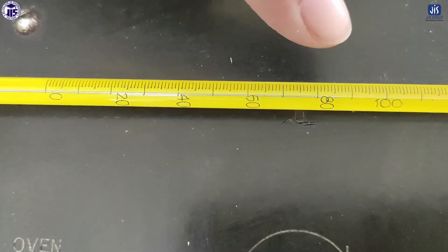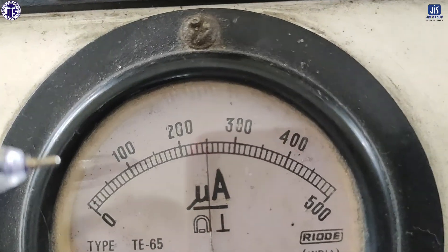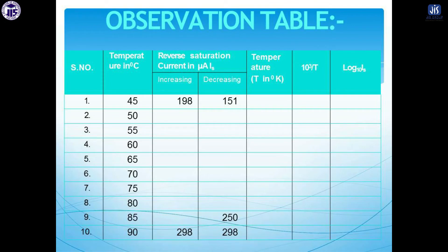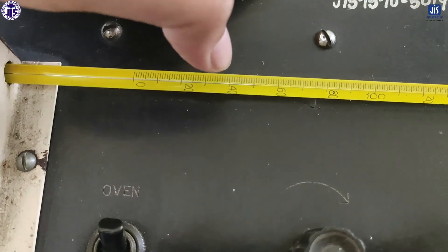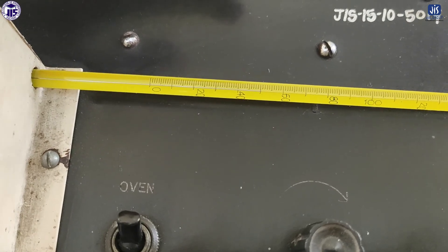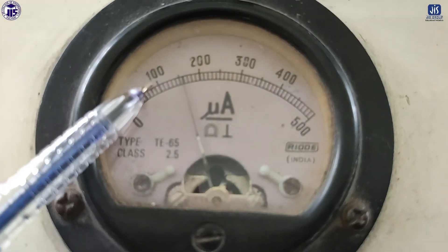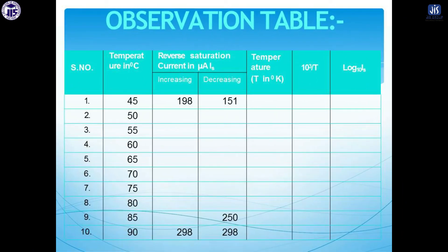As it decreases to 85 degrees, the current is 250. You can see the current is decreasing. Now the temperature has decreased to 45 degrees, and the current is near about 151. Remember, whenever you calculate this column, all the readings will be in the range of 10 to the power minus 3.